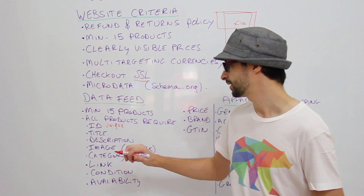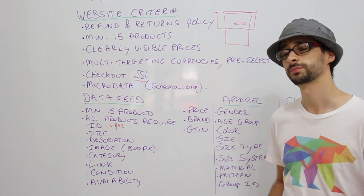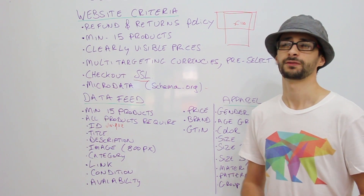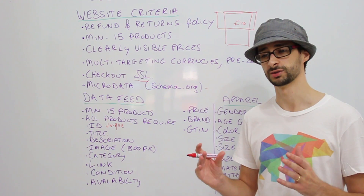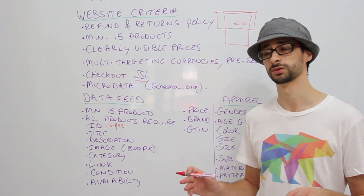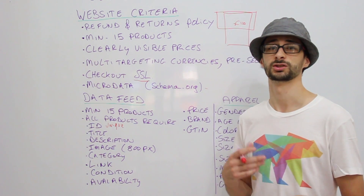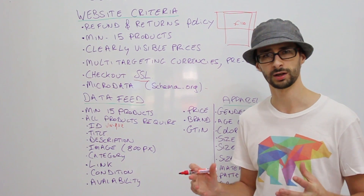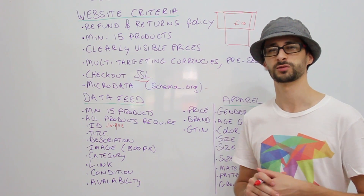Then you need a title, description, and image. Your image needs to be a minimum of 800x800 pixels. If you don't have large enough images and they are too small, do not upscale them. If Google sees that you're upscaling most of your images, it will simply not show them in the Google Shopping feed, because it wants quality and wants to serve the customer in the best possible way.